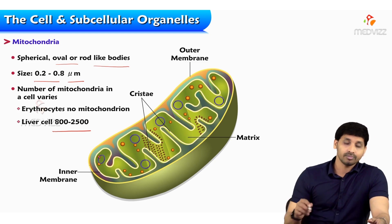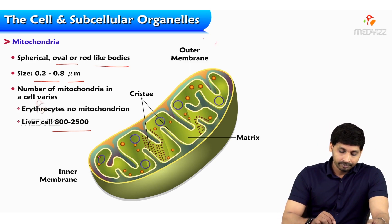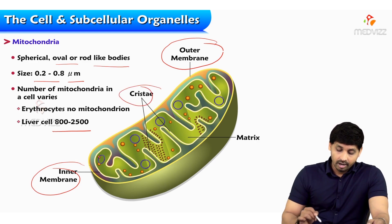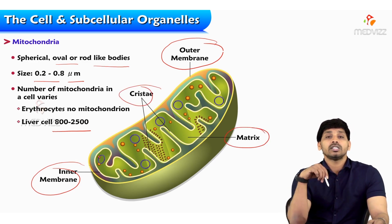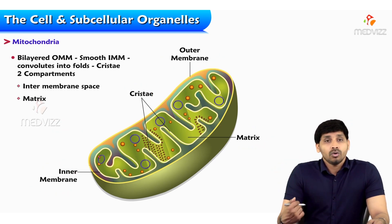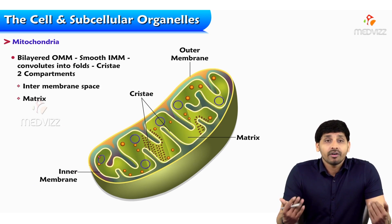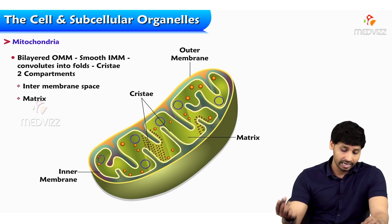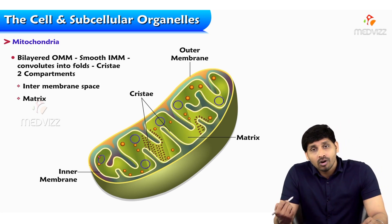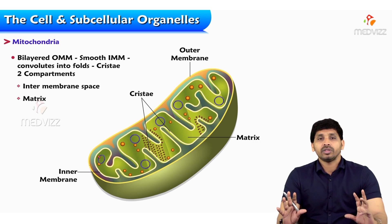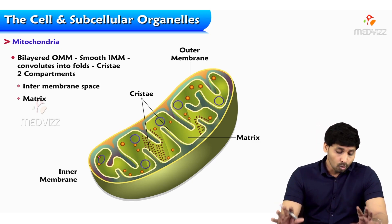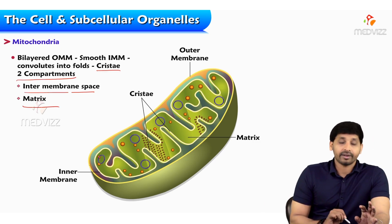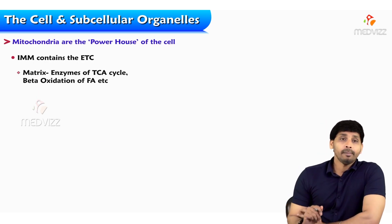Because so many functions are packed into the liver cell, mitochondria is a major subcellular organelle especially in liver cells. Looking at the structure: here you can see the outer membrane and inner membrane. The foldings inside are known as cristae, and the matrix is where these inner foldings lie. The mitochondria has a bilayered outer mitochondrial membrane and a smooth inner mitochondrial membrane.